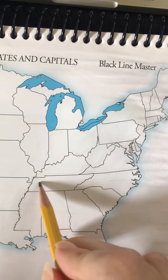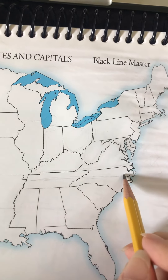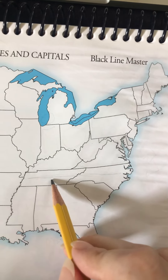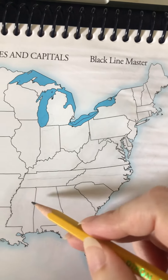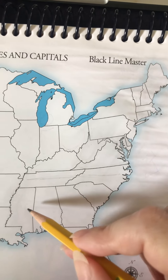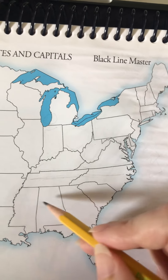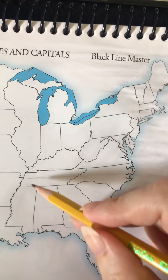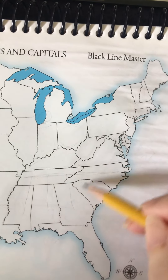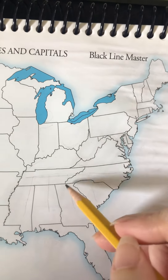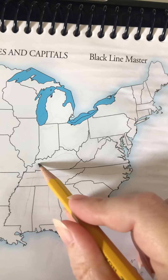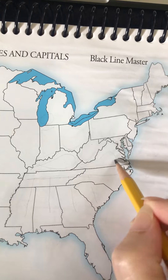Another way to remember Tennessee: if you draw this part as a table, going across Tennessee and North Carolina, that's the top of the table. Then Mississippi, Alabama, Georgia, and South Carolina are the legs of the table. And on the table, getting ready to be eaten, are the Kentucky fried chicken leg and the Virginia ham.